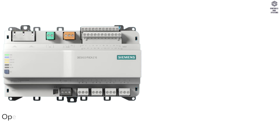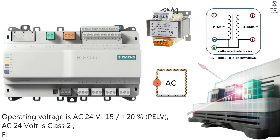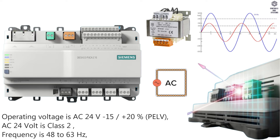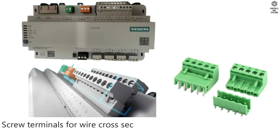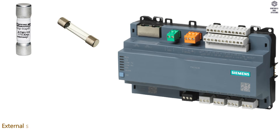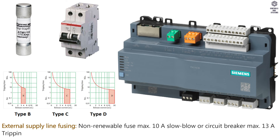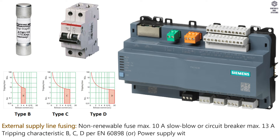Electrical Data: Operating Voltage is AC 24V, minus 15 to plus 20%; AC 24V is Class 2. Frequency is 48 to 63 Hz. Screw Terminals for wire cross-sections up to maximum 2.5 mm². Internal Fusing is 4 Amps irreversible or non-replaceable. External Supply Line Fusing is non-renewable fuse maximum 10 Amps slow blow, or Circuit Breaker maximum 13 Amps, Tripping Characteristic B or C, per EN 60898, or Power Supply with Current Limitation of maximum 10 Amps.